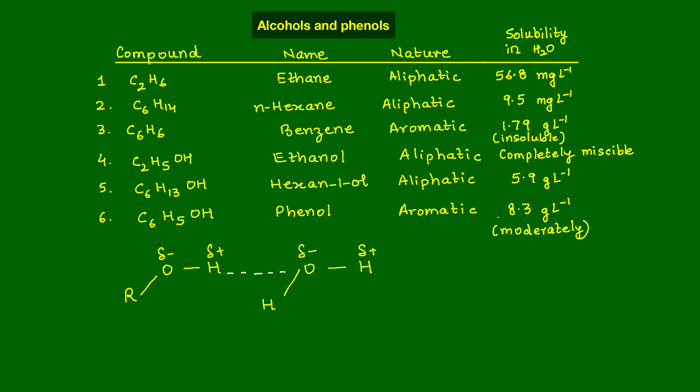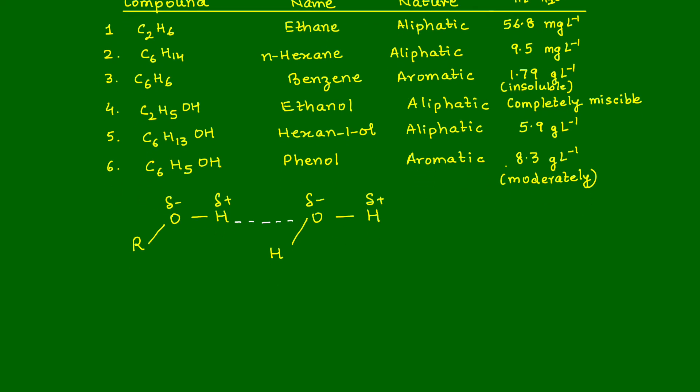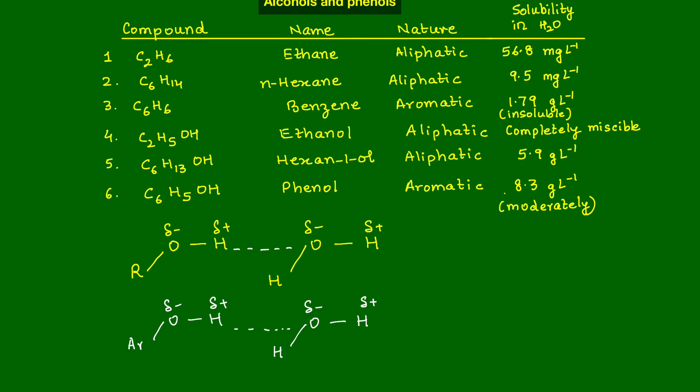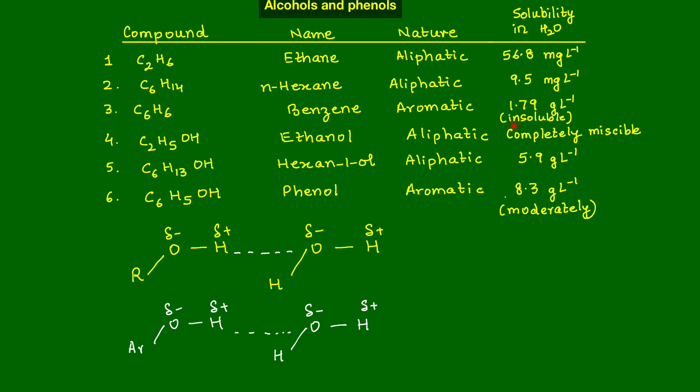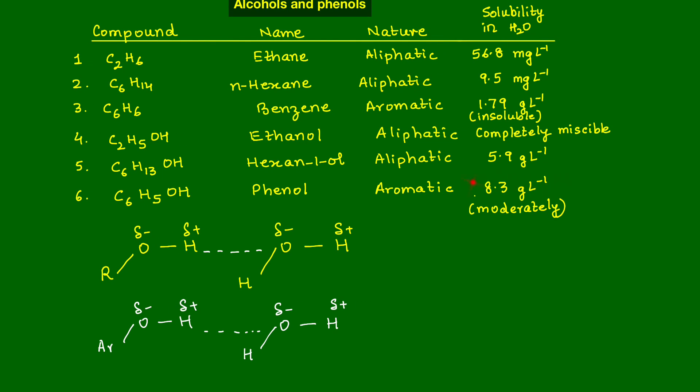So is there no hydrogen bonding in the case of aromatic alcohols? Logic tells us, yes, there should be, right? So I can write it as A-R-O-H. So there is hydrogen bonding between the water molecules and the phenol. So delta negative, delta positive, delta negative and delta positive. But then, why this differentiation?